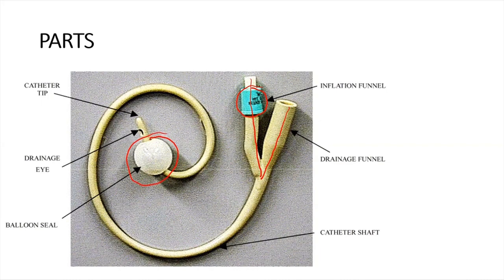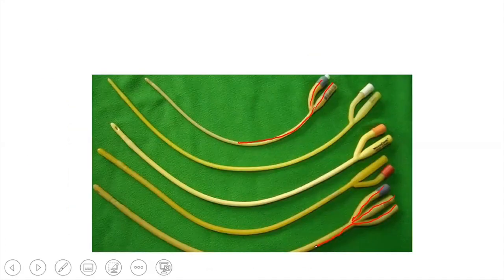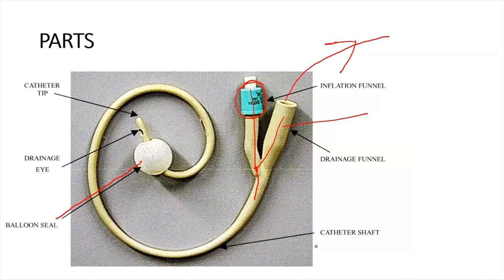It has the catheter shaft, which carries channels from both the inflation funnel and also a channel from the eye to the drainage funnel. It also has the tip of the catheter and the eye from which the drainage commences and exits through the drainage funnel. Based on the number of channels, we can classify it as a two-way catheter or a three-way catheter.